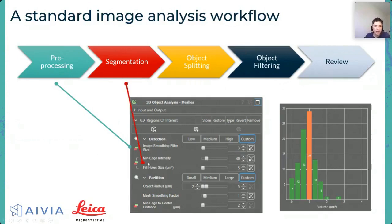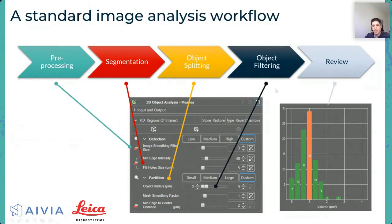The segmentation is done with thresholding based on intensity, and it can also fill holes in objects. Then you can split the objects and filter them by minimum and maximum radius, get some smoothing on top, so that at the end you have a complete result that can be reviewed in the charts directly — everything in the same interface, no need to change windows.